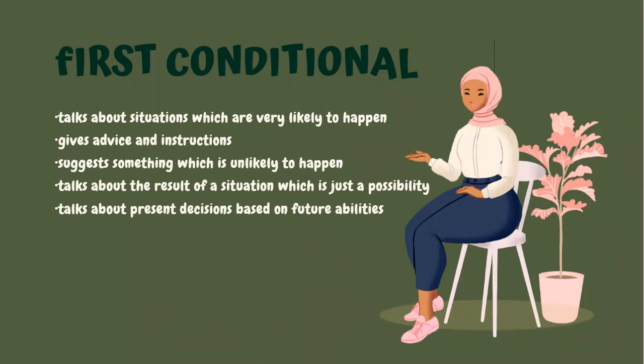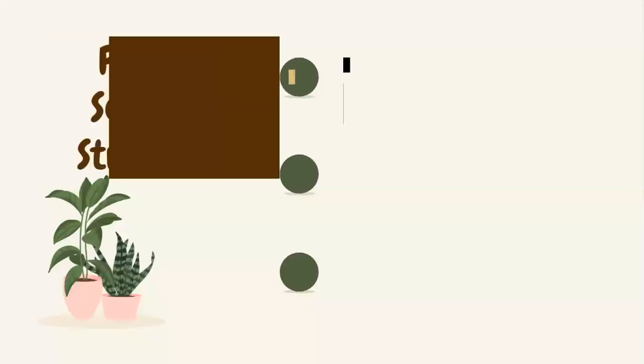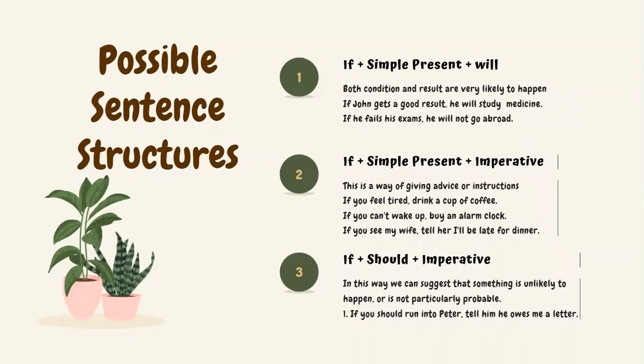Now we move on to the first conditional. First conditionals talk about situations which are very likely to happen. It gives advice and instructions, suggests something unlikely to happen, may talk about the result of a situation which is just a possibility, and also talks about present decisions based on future abilities.